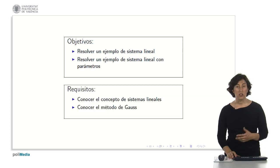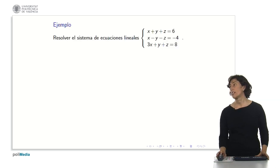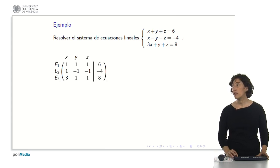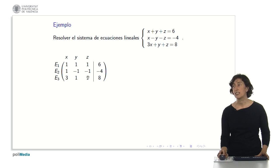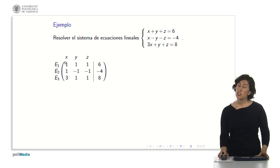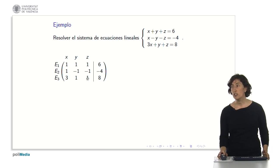We will remember what a linear equation system is and how to apply the Gauss method to solve them. If I want to solve the linear equation system on the screen, the Gauss method tells us to write the system using only the coefficients: the first equation x plus y plus z equals 6, the second equation x minus y minus z equals minus 4, with x below x and z below z, then the independent terms and the third equation. We then perform equivalence transformations to make zeros below this diagonal line — a zero here, a zero here, a zero here, and a zero here.